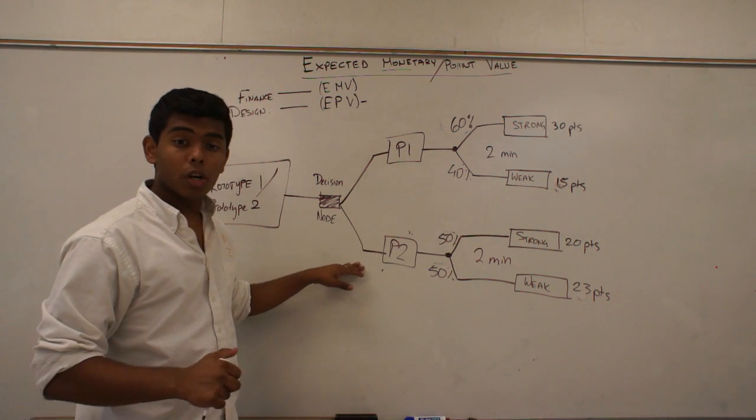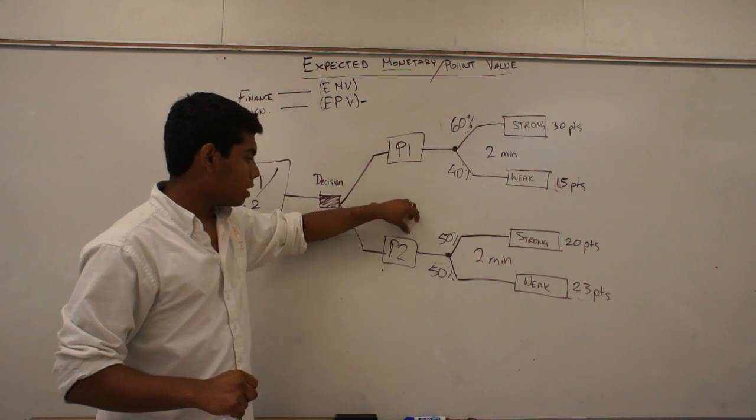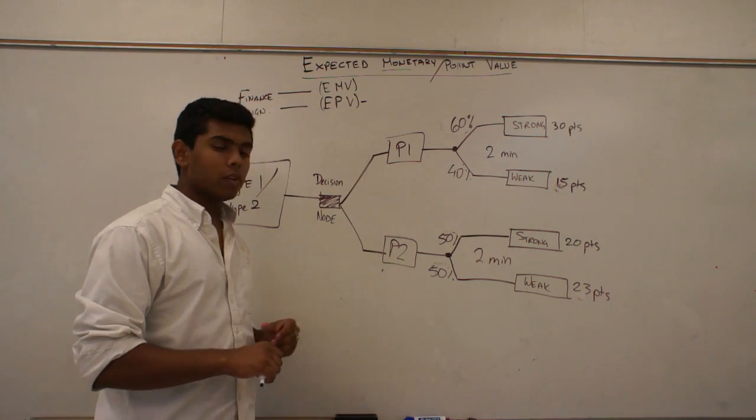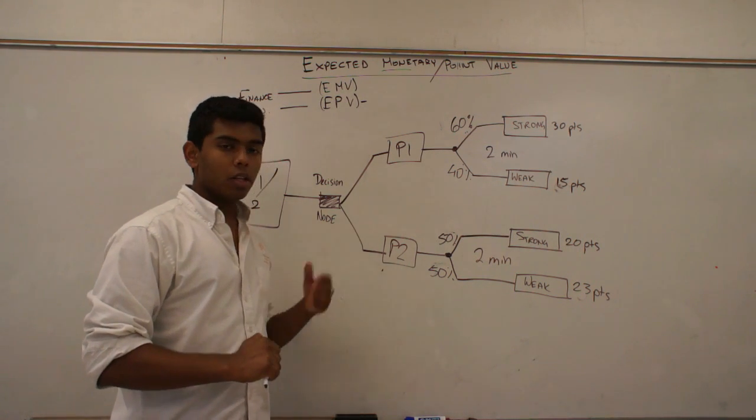Whereas, same thing goes for prototype two, it's the same thing, but it's just a 50 to 50 ratio. And that's obviously something that I made up just for this example to work out.